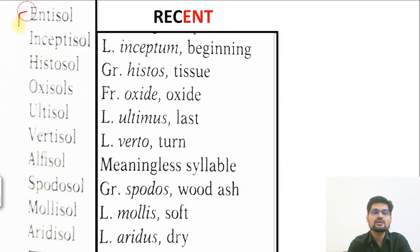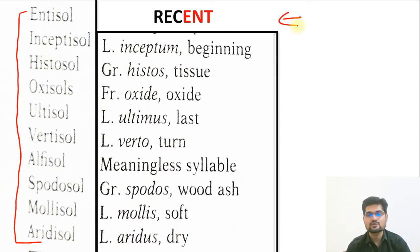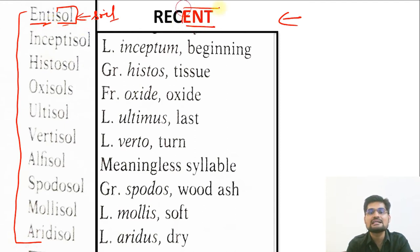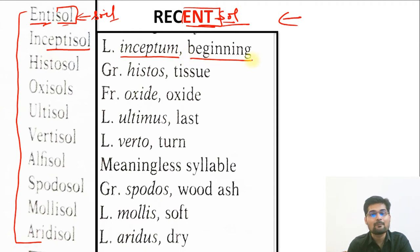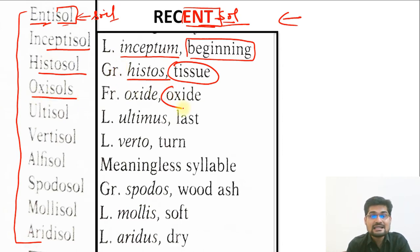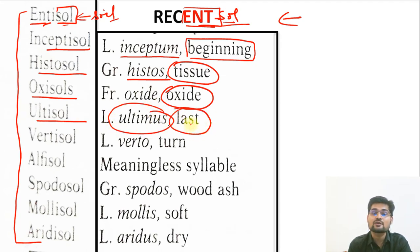Now about the nomenclature of USDA soil orders. All names have the suffix 'sol' meaning soil. The prefix relates to specific words. Entisol comes from 'recent.' Inceptisol comes from 'inceptum' meaning beginning. Histosol comes from 'histos' meaning tissue — like histology — indicating organic soil. Oxisol comes from oxide. Ultisol comes from 'ultimus' meaning the last or ultimate, highly leached soil. Vertisol comes from 'verto' meaning turned or inverted.